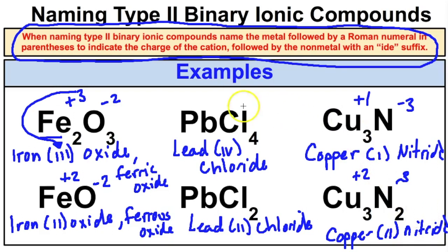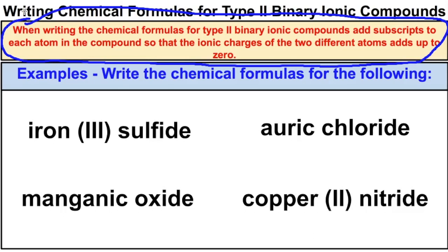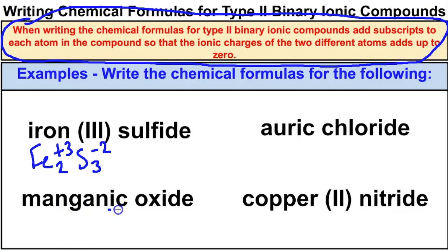When writing chemical formulas for type 2 binary ionic compounds, add subscripts so the ionic charges add up to 0, just like with type 1. Iron 3 is Fe with a plus 3 charge; sulfide is S with a minus 2 charge. These don't add up to 0, so you need 2 iron and 3 sulfide. For manganic oxide, manganese has a plus 4 charge and oxide is O negative 2 — you need two oxides to balance the positive 4.